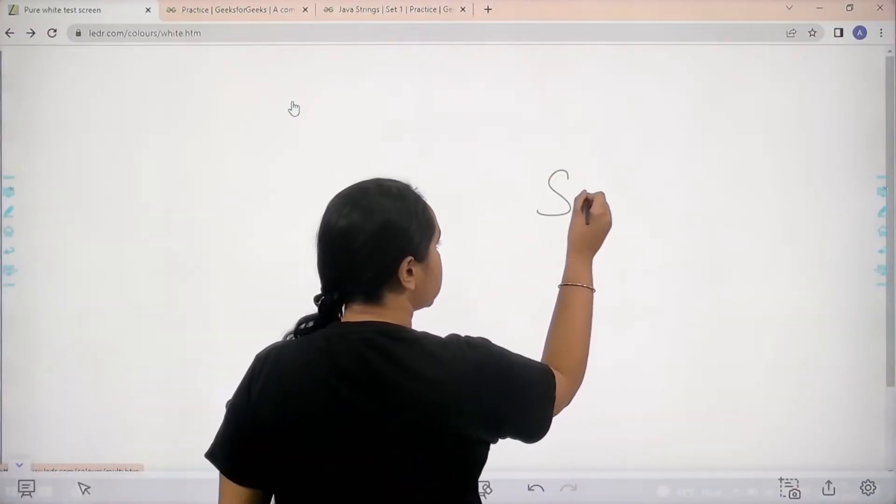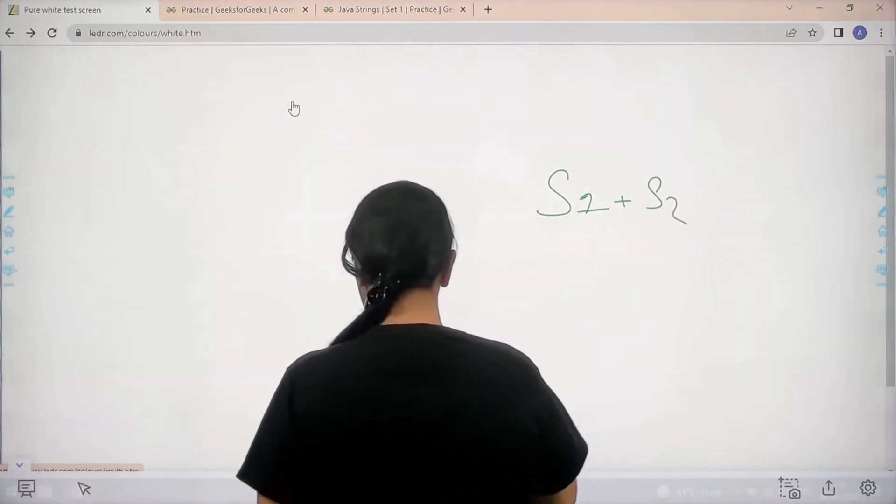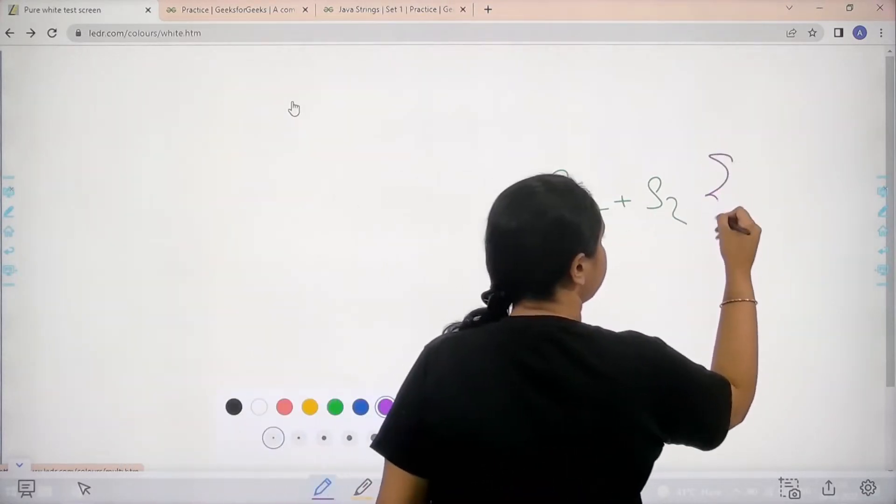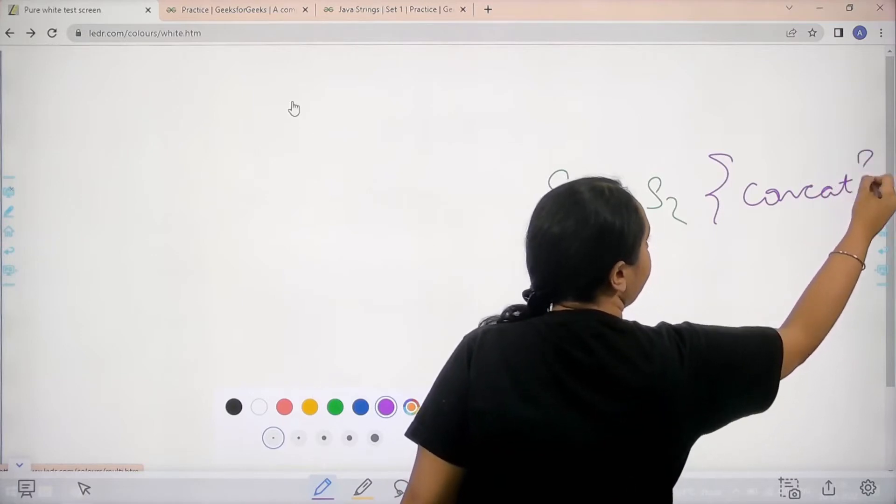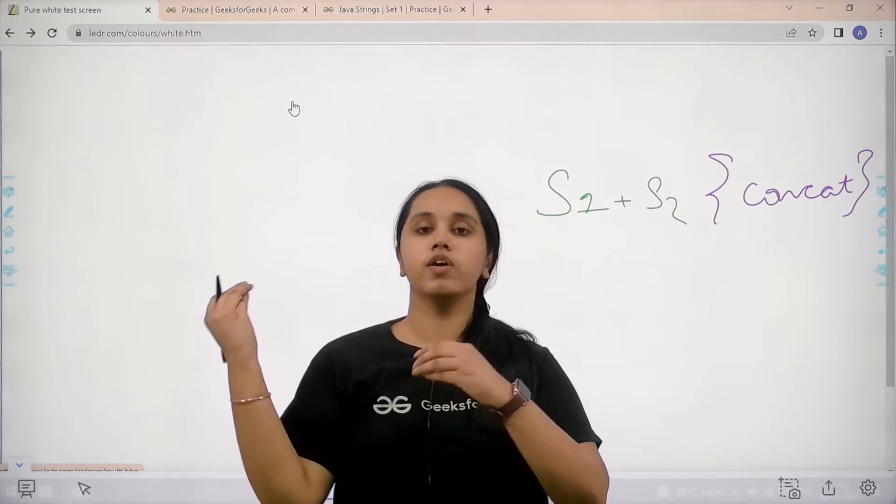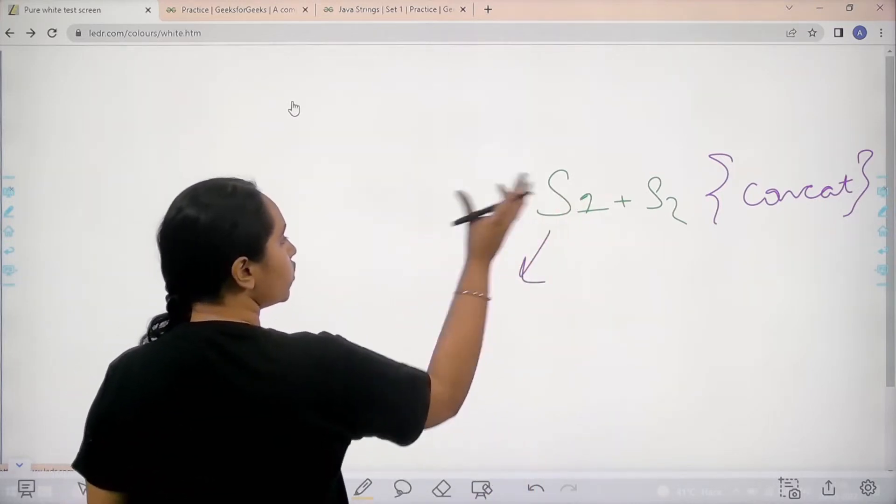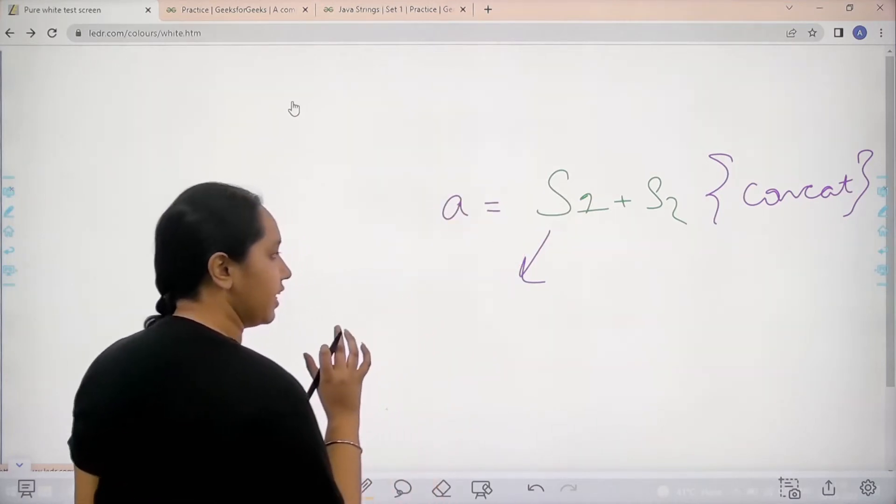First we just need to write s1 plus s2. So what is this doing? This is concatenating the string. Now the second step is to reverse the string. So for this what I would do is I would store this in another string that is a.